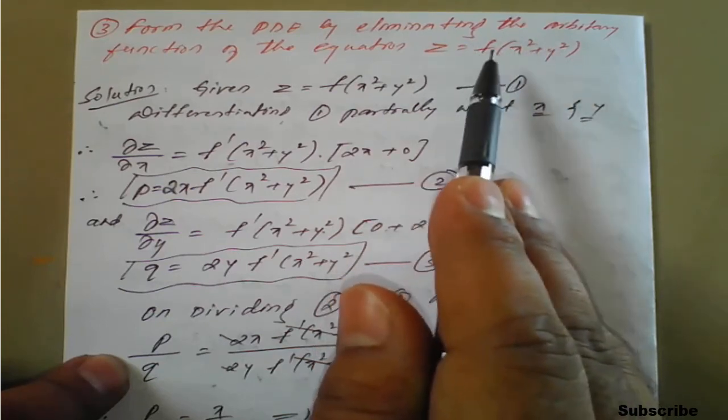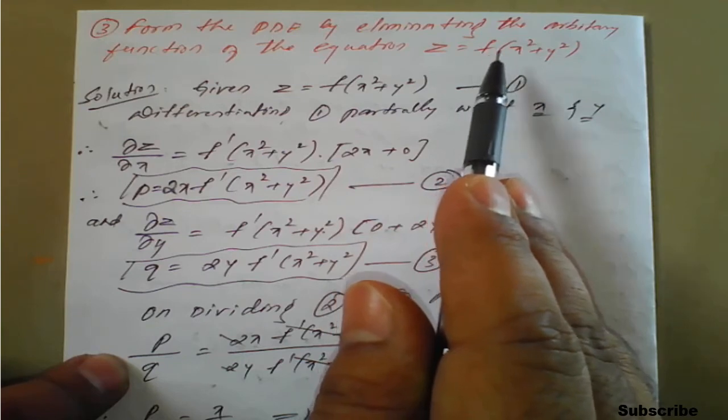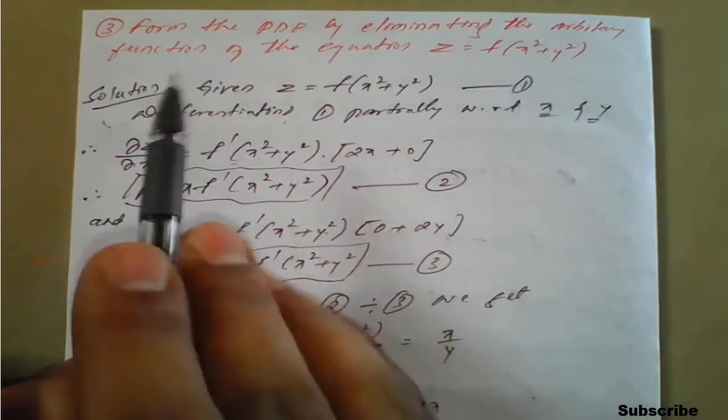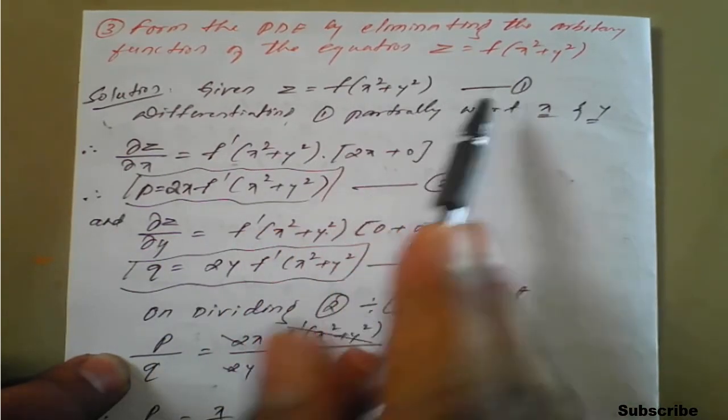You can see here we have only one function, means we need to differentiate this equation with respect to x and y because here x and y are the two independent variables. Given z equals f of x square plus y square, give equation number 1.